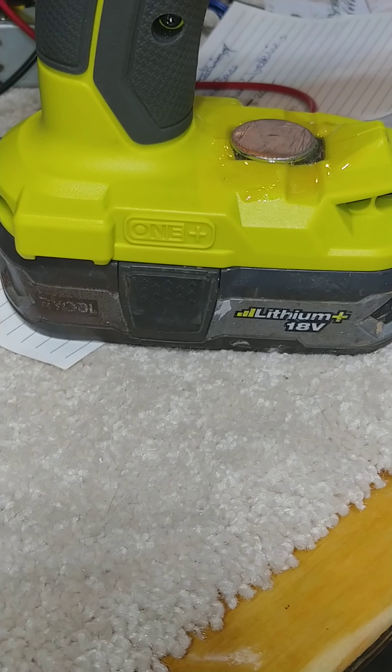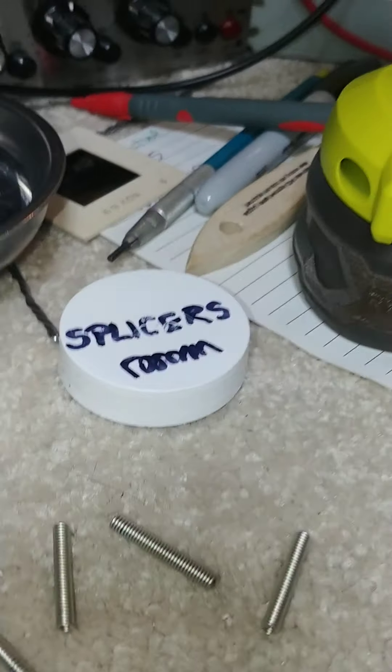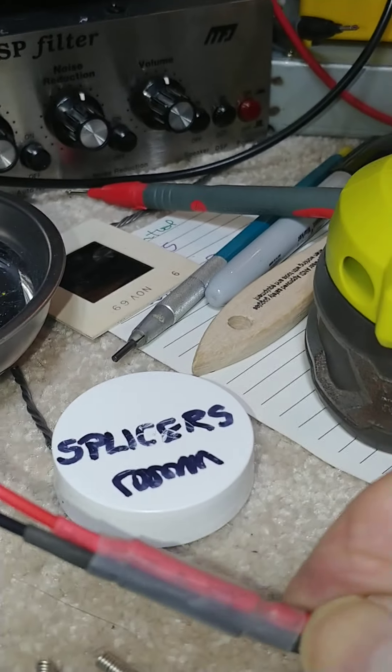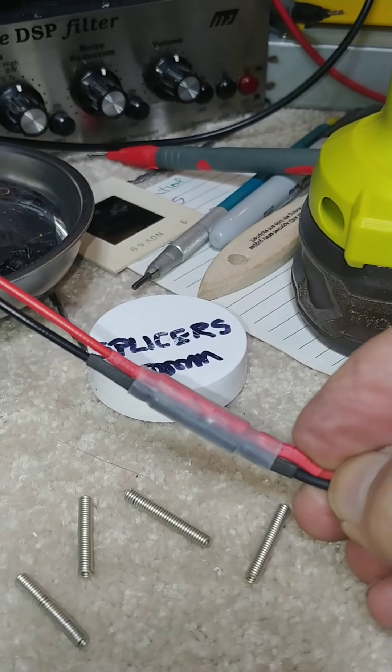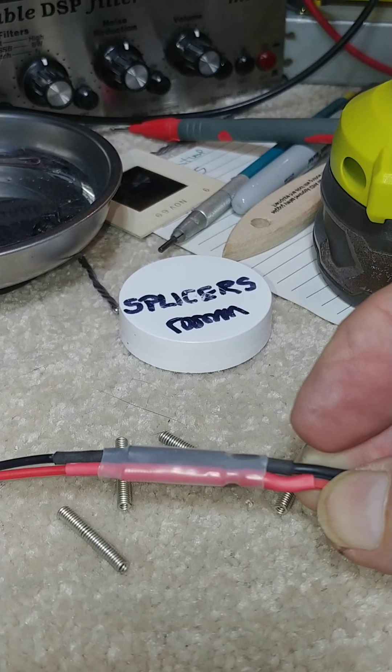An example of what it looks like when we're all done is this is the same connector. Trying to hold things with one hand. And this is the splice. And if you look at the splice you see it's a nice straight even thing. It's not a lump.